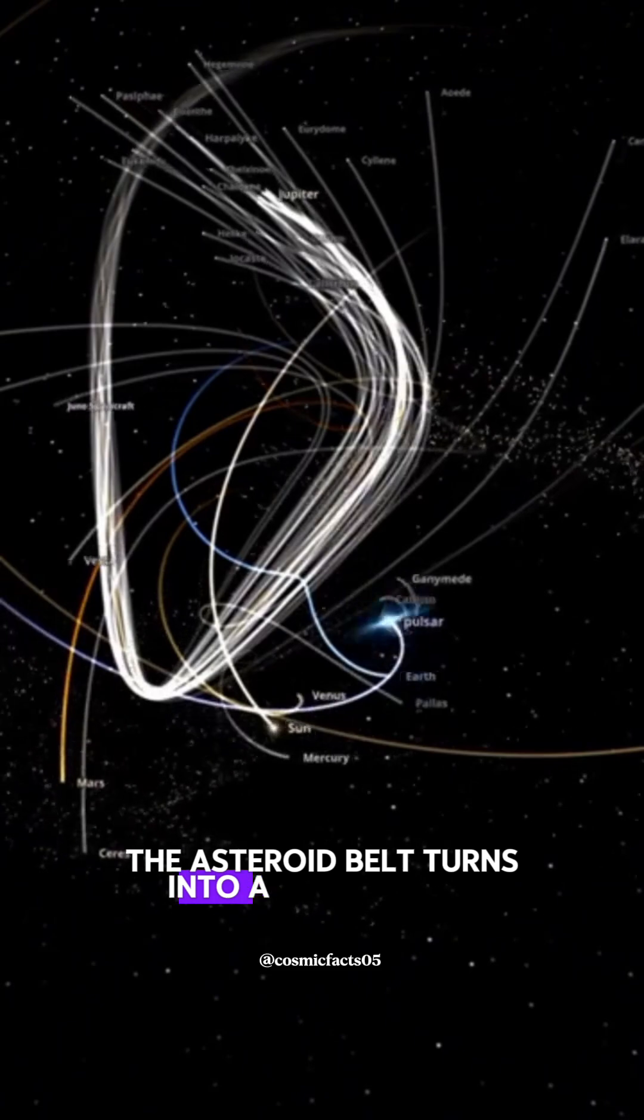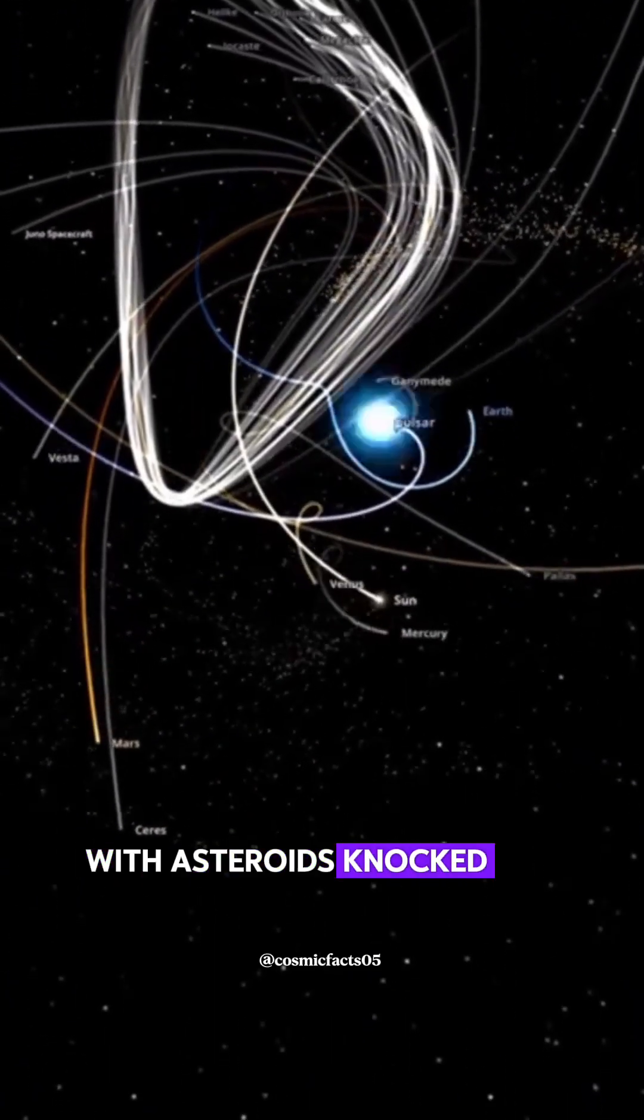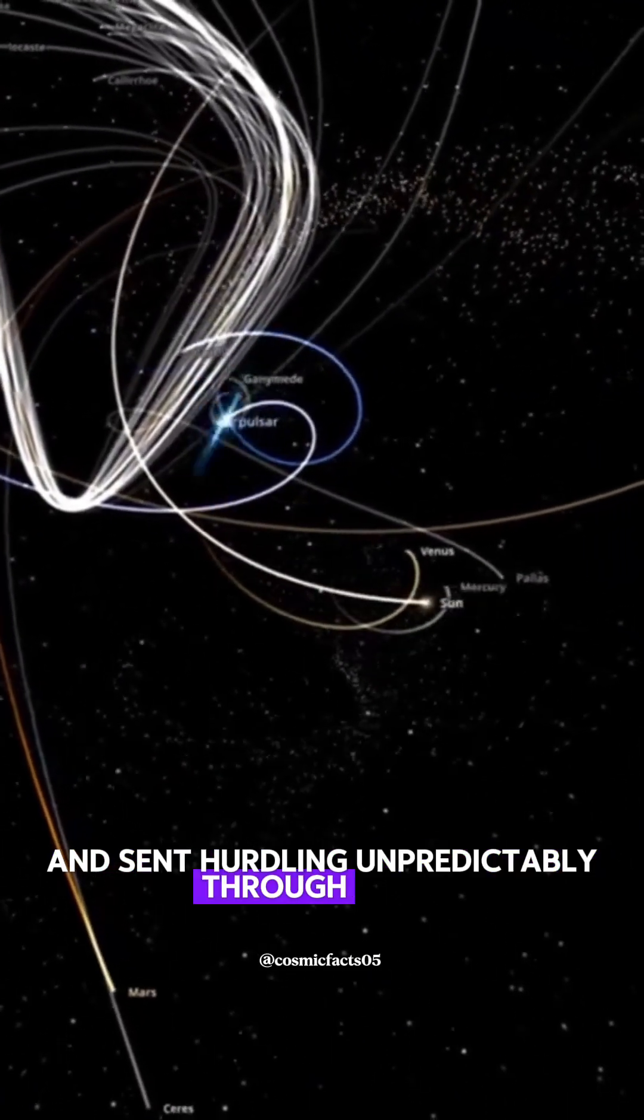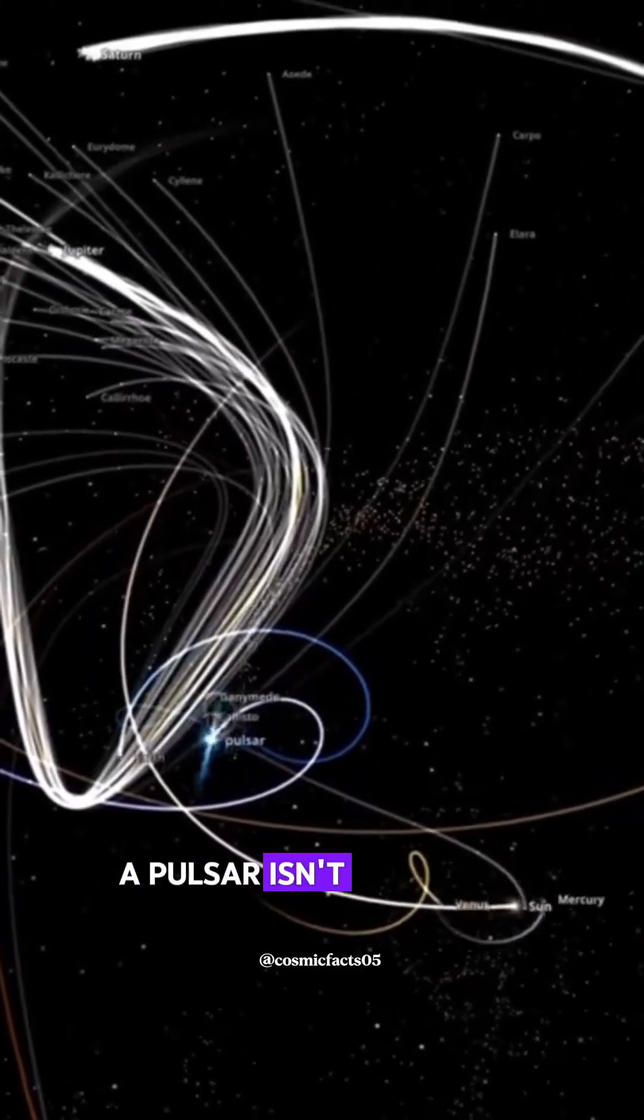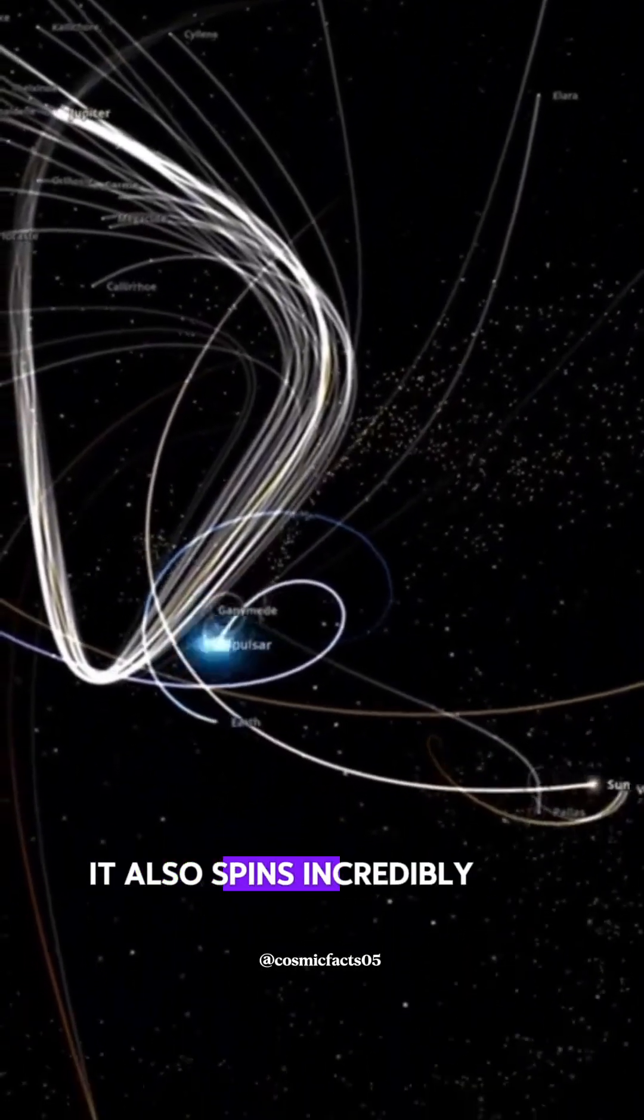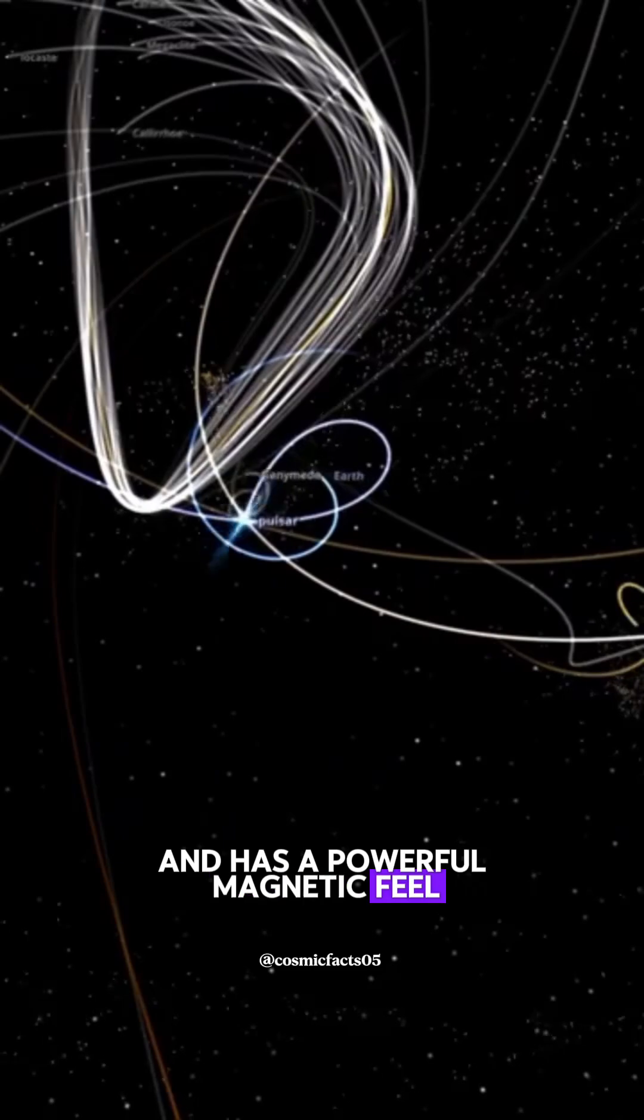The asteroid belt turns into a danger zone, with asteroids knocked out of place and sent hurtling unpredictably through space. A pulsar isn't just dense, it also spins incredibly fast and has a powerful magnetic field.